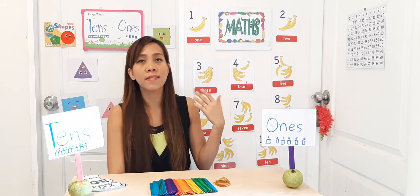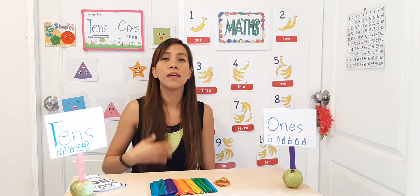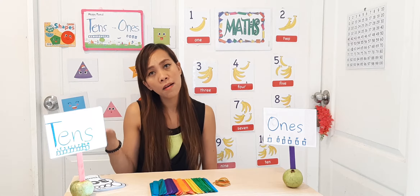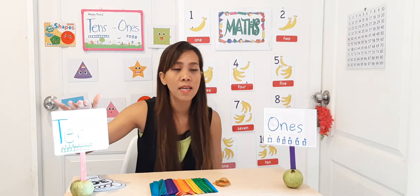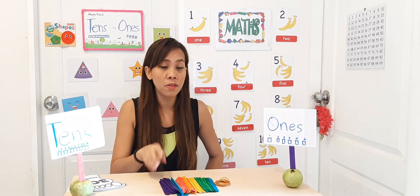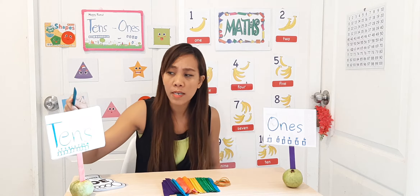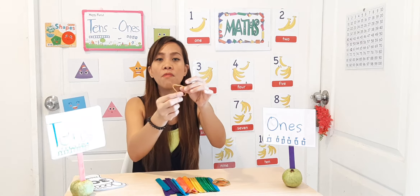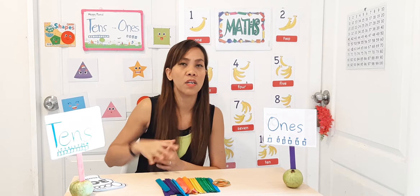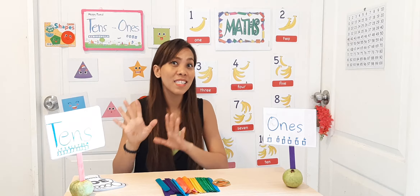So yesterday we had some activities using the popsicle stick and the example of tens and ones. In math, every digit in a number has a place value — which number belongs to tens and which number belongs to ones. We have some popsicle sticks here. You can ask your mommy and daddy to give you some things, or any object — your toys, lego. Let's group the toys or anything you have into tens and ones.